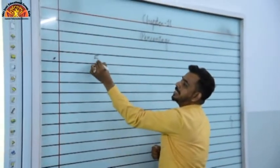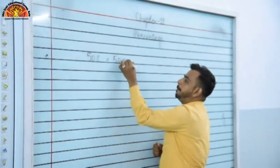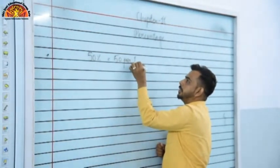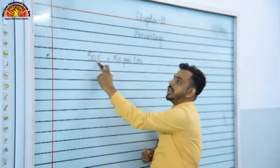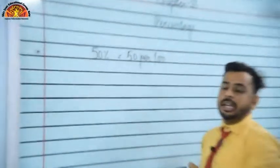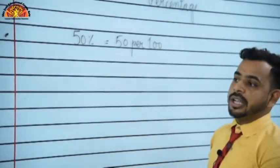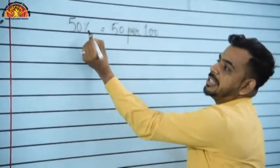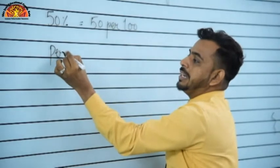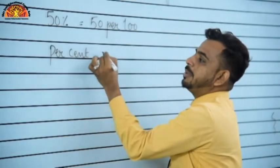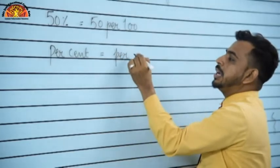50% means 50 per 100. This is the sign of percentage. Percent means per 100 — so percent ka meaning kya ho gaya? Per 100.